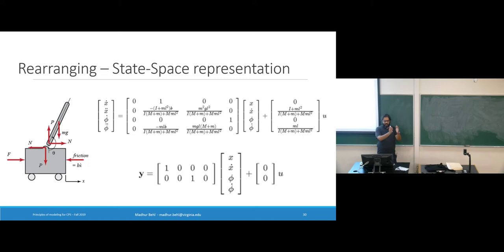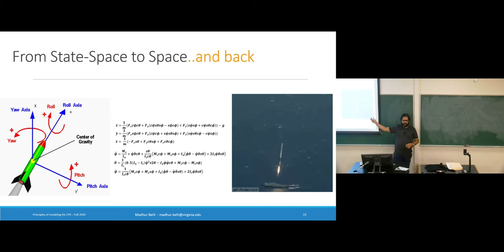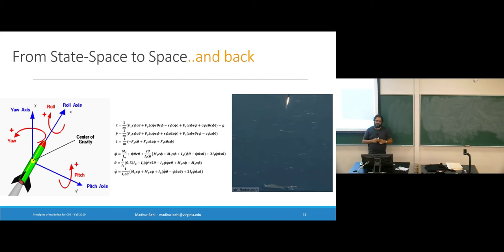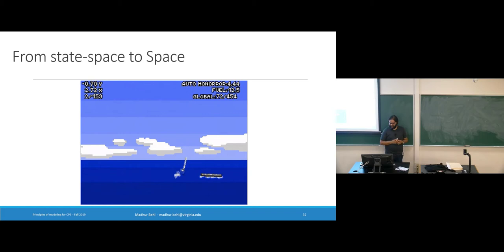To close the loop on real-world examples: you can take a pendulum, build an ODE, get the state-space model, and take it all the way to space and back. This is how we are able to land rockets on barges floating in the ocean — that is an inverse-pendulum problem. The same principle, though more complex, is being used in the real world to great effect. People have also made games where you try to land it manually — it is very hard.